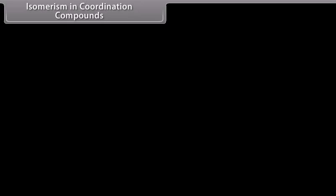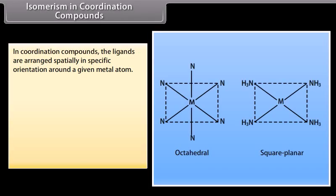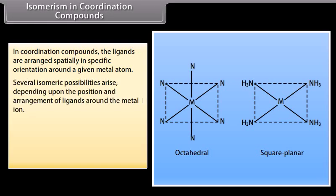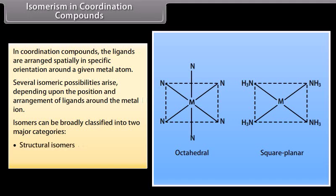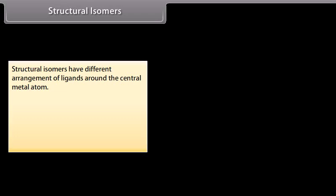Isomerism in Coordination Compounds. Two or more chemical compounds with identical chemical formulas but different structures are called isomers, and the phenomenon is known as isomerism. In coordination compounds, ligands are arranged spatially in specific orientations around a given metal atom. Several isomeric possibilities arise depending upon the position and arrangement of ligands around the metal ion. Isomers are broadly classified into two major categories: structural isomers and stereoisomers.